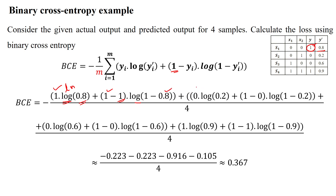For sample number 2, the actual output is 0, then log of 0.2 (the predicted value), then 1 minus actual output 0 into log of 1 minus 0.2. Then sample number 3 values are substituted, and sample number 4 values are substituted.